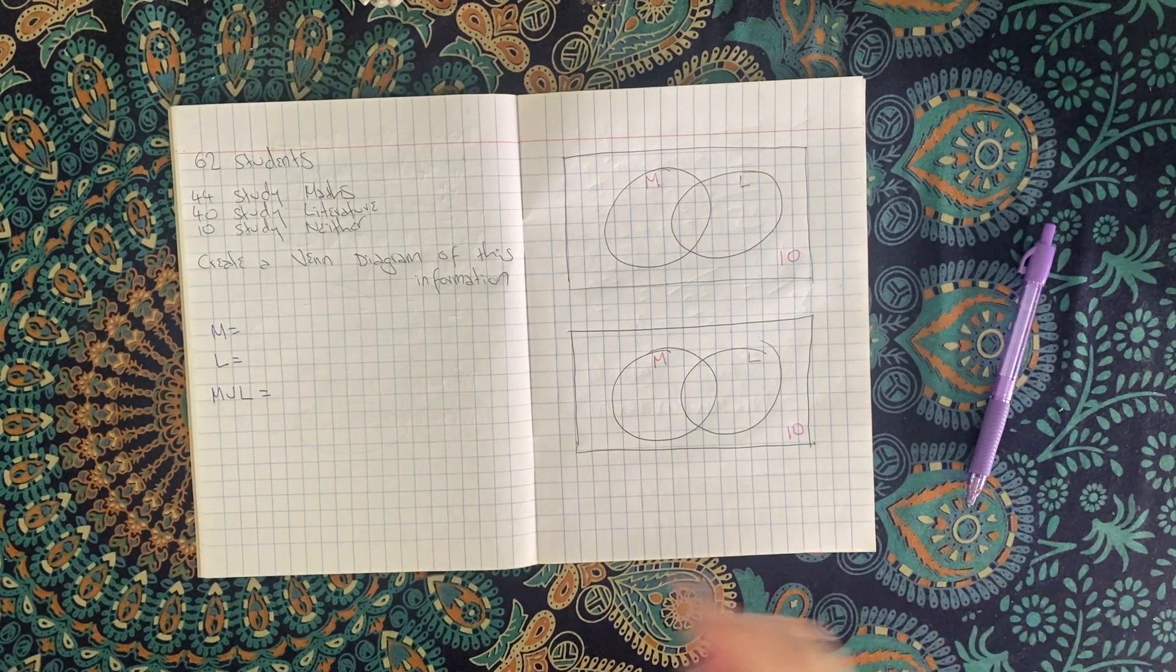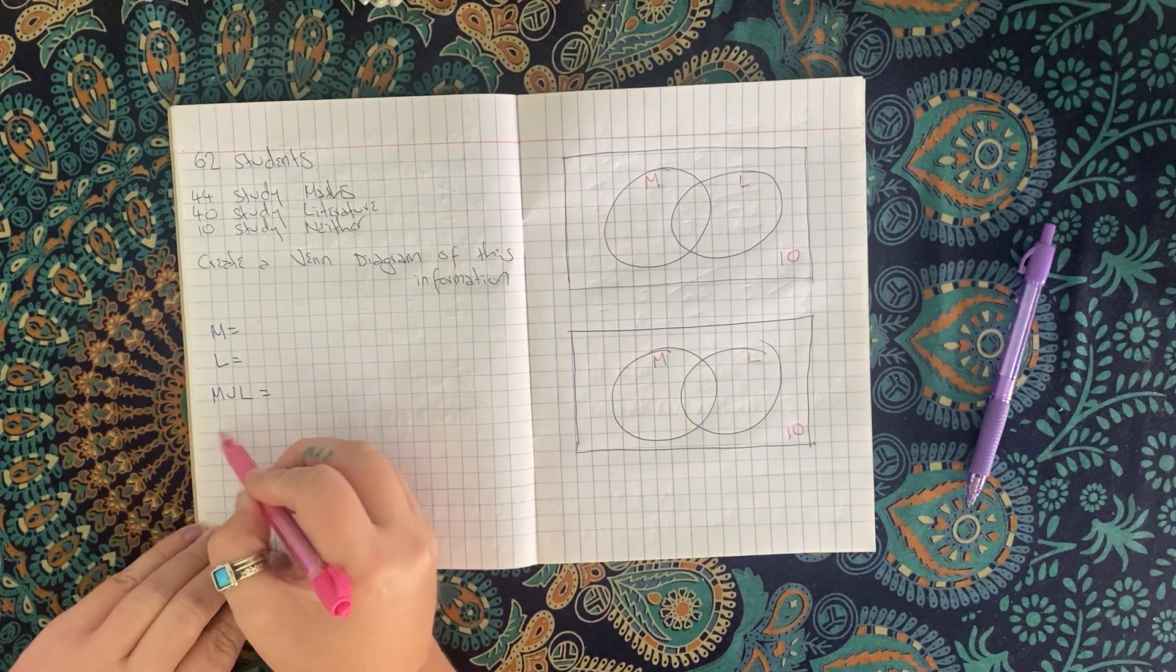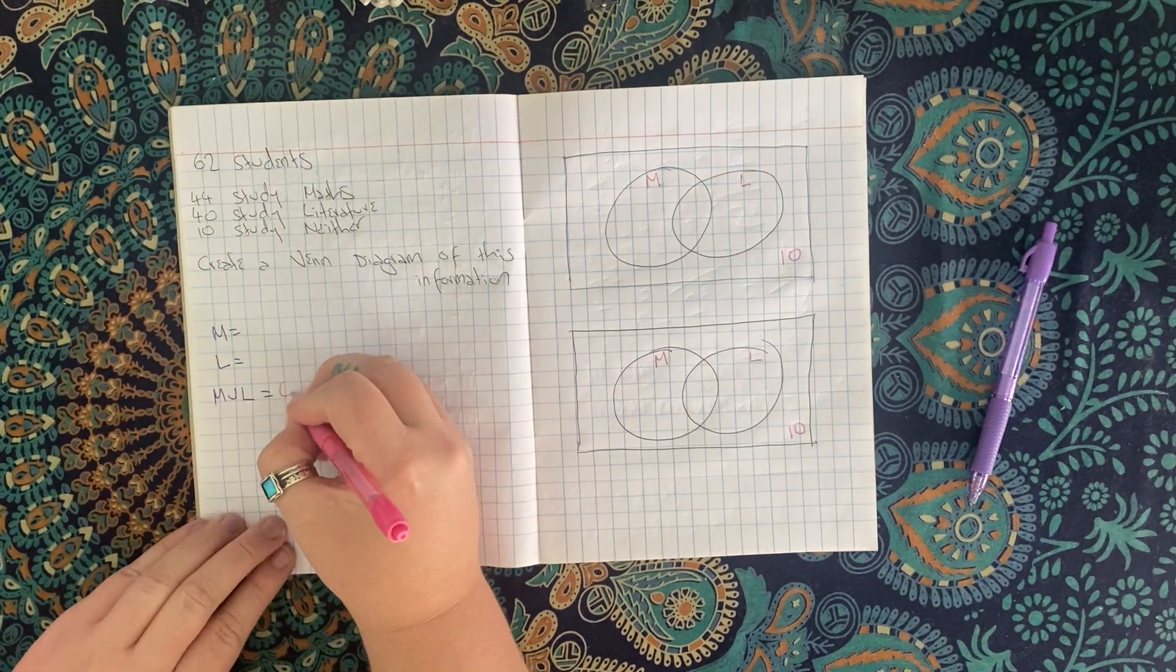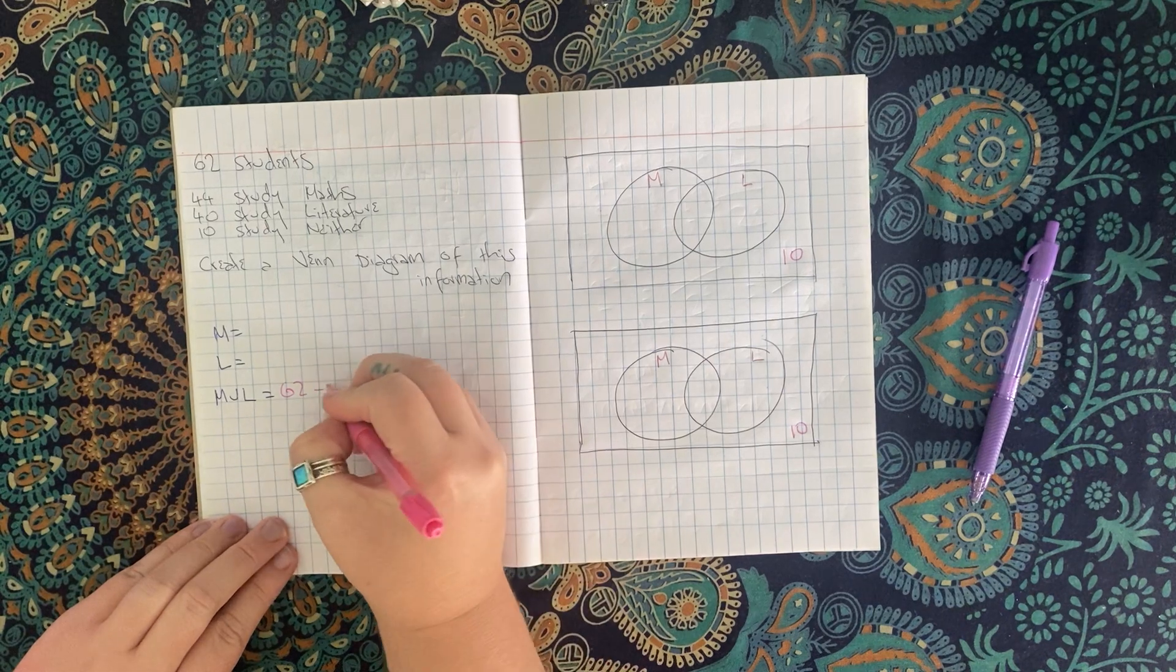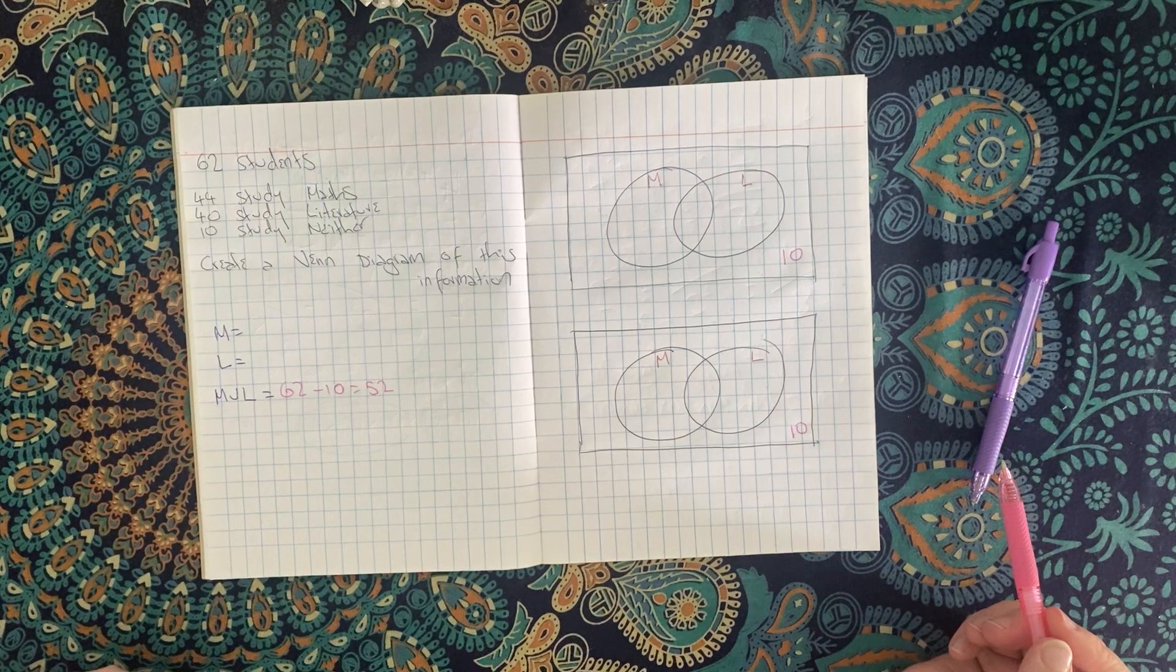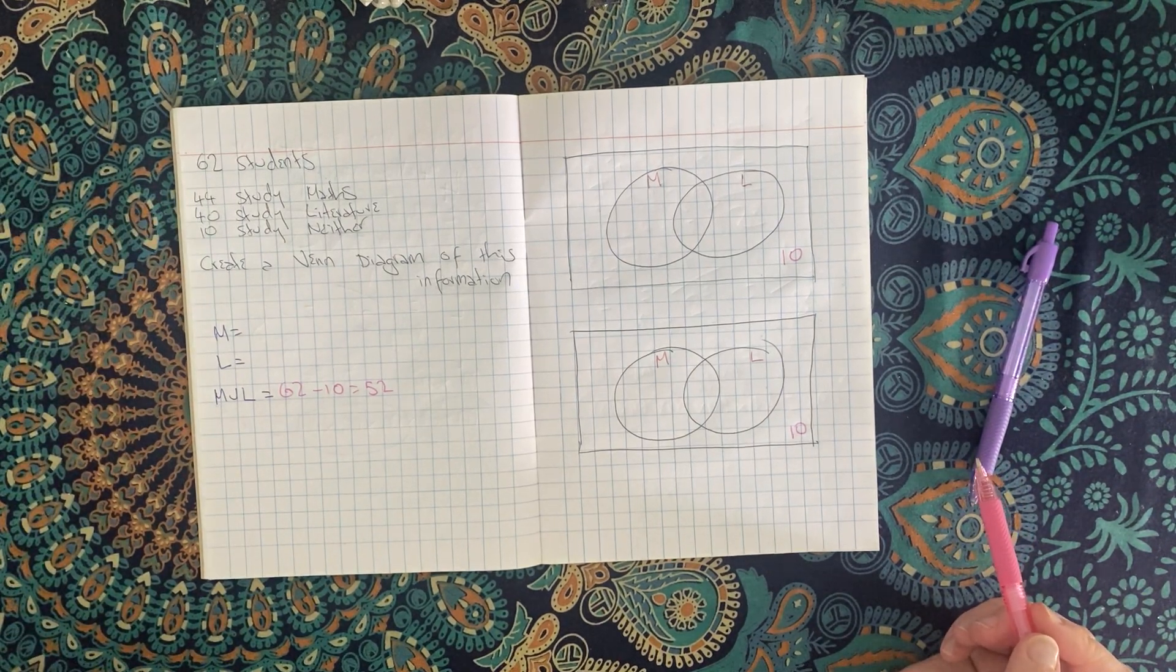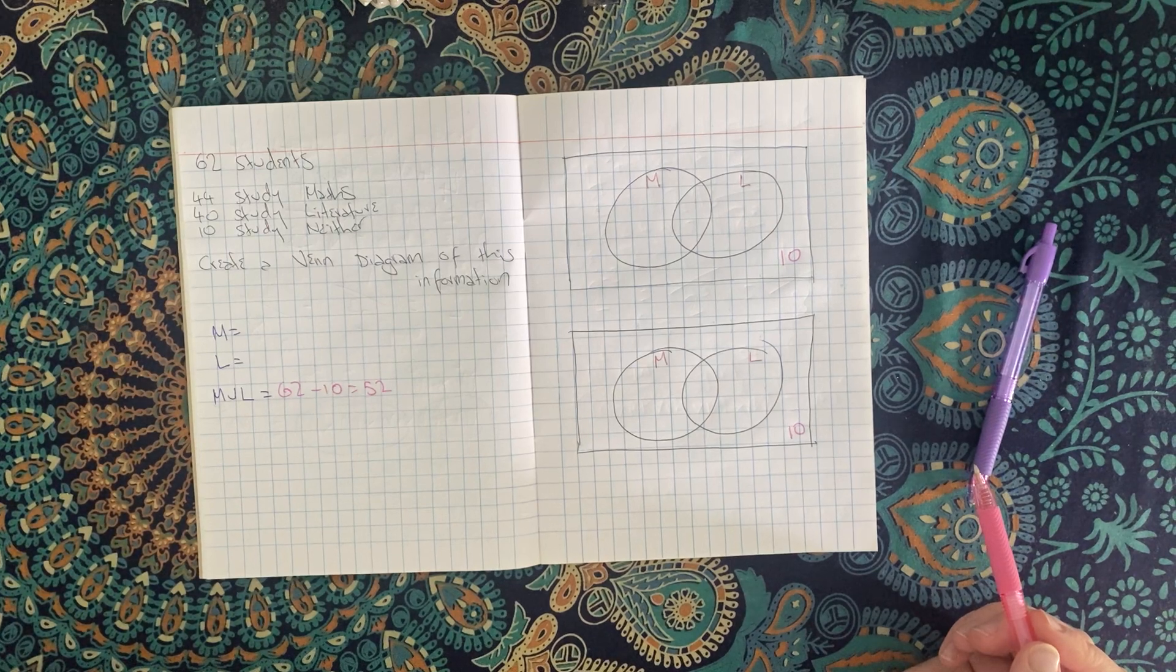Then I'm going to think about what I've got left over. I know the union of these two things. I've got 62 students altogether, but 10 of them don't study anything. So I know that between these two circles, I have to have 52 students, but this adds up to 84. Let's talk about how we can work out exactly how many students are in each.